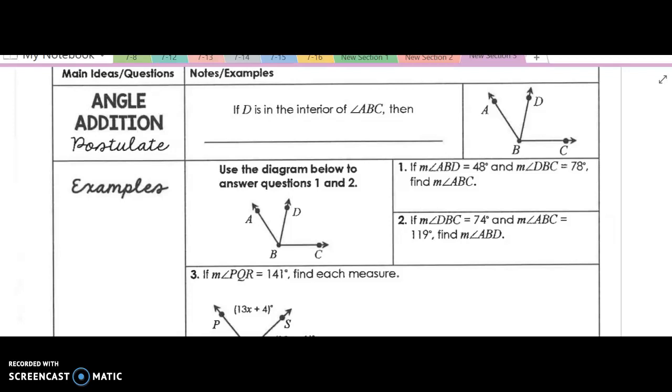If D is in the interior of angle ABC, well, then angle ABD plus angle DBA, this angle right here, must be equal to angle ABC.